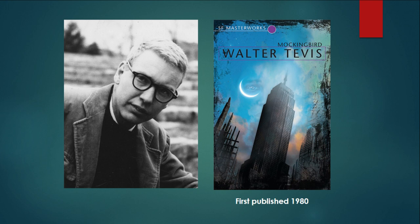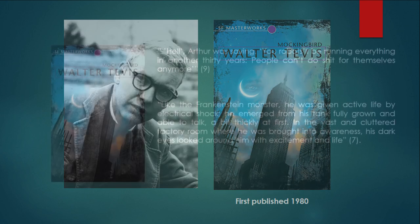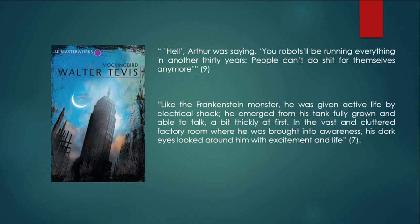Mockingbird isn't simply and only a dark technology takeover fantasy, but inquires deep into the potential effects of unchecked and unquestioned technological advance. As one human character addresses one of the novel's robot protagonists: 'You robots will be running everything in another 30 years. People can't do shit for themselves anymore.' The robot protagonist is also described by the narrator with reference to a famous intertext: 'Like the Frankenstein monster, he was given active life by electrical shock. He emerged from his tank fully grown and able to talk... his dark eyes looked around him with excitement and life.'